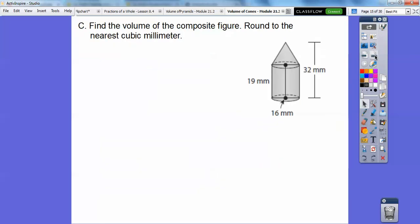All right, so find the volume of this composite figure and round to the nearest cubic millimeter. So we have, it looks like a cylinder downstairs and we have a cone upstairs, so cylinder plus cone. So the whole diameter is 16, so the radius is 8, and since this is 19 and the whole height is 32, what's that going to give me, 13 right there? So that height of the cone is 13, so cylinder plus cone.